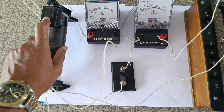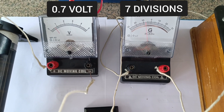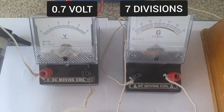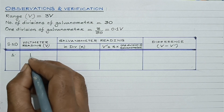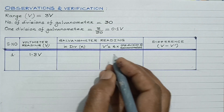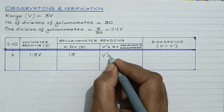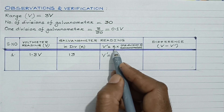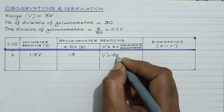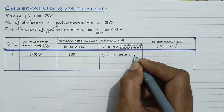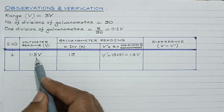By changing the value of resistance through the rheostat, a third reading is taken. Corresponding to a deflection of 7 divisions, the voltmeter shows a reading of 0.7 volt. In the first case, the voltmeter reads 1.3 volt and the galvanometer gives a deflection of 13 divisions. V-dash equals 13 multiplied by 0.1, which equals 1.3 volt. So the converted voltmeter and the actual voltmeter give the same reading.